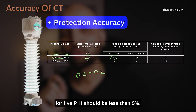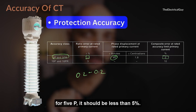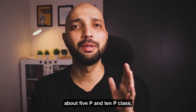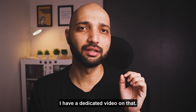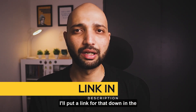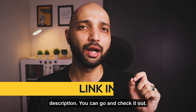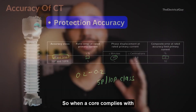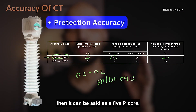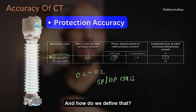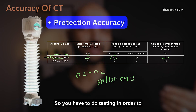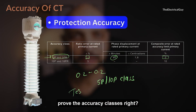For 5P, the composite error should be less than 5%. When a core complies with all these requirements, it can be said to be a 5P core. This is determined through testing — you have to do testing in order to prove the accuracy classes.